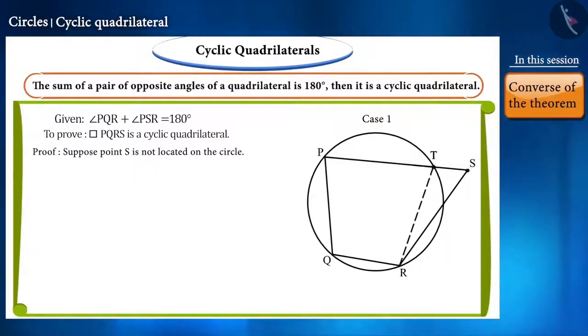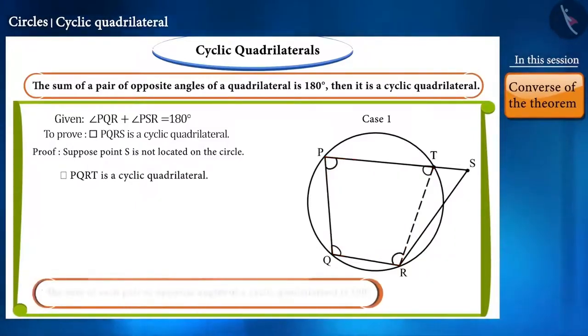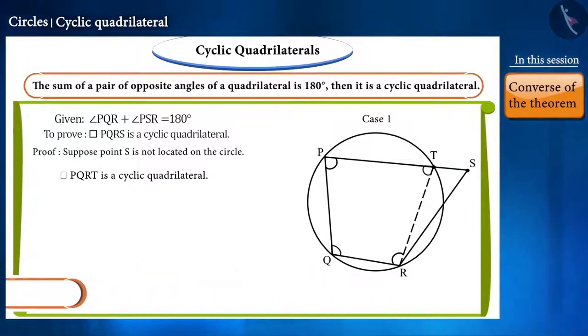Now, the four points P, Q, R, and T are located on the circle. Thus, quadrilateral PQRT will be a cyclic quadrilateral. We know that the sum of each pair of opposite angles of the cyclic quadrilateral is 180 degrees. In this way, we will get these two equations.